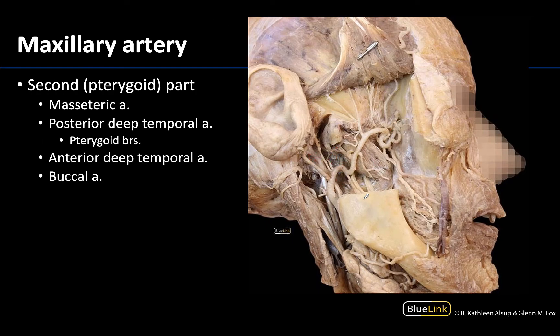Moving to the second part of the maxillary artery, which on this donor is going to be superficial to the inferior head of the lateral pterygoid muscle. All the branches of the second part will supply muscles of mastication and surrounding structures. Remember we have those four muscles of mastication: the masseter, the temporalis, and the pterygoid muscles. You'll also have the closely associated buccinator muscle right here, which is innervated by the facial nerve but will have some of its blood supply from branches of the maxillary artery.